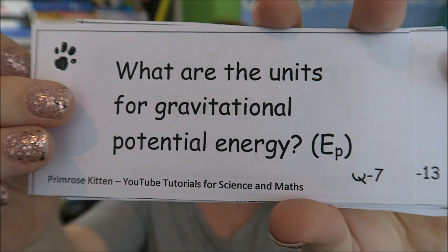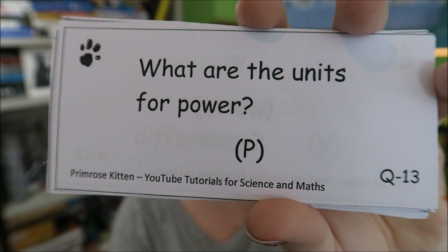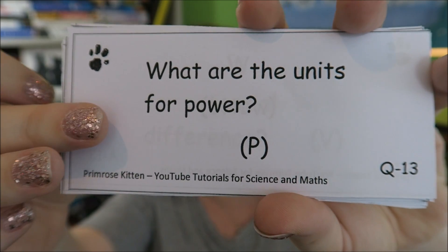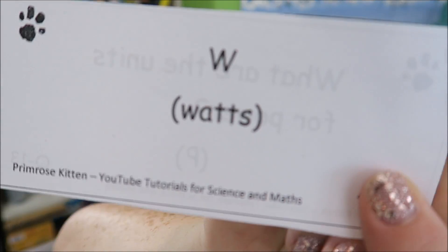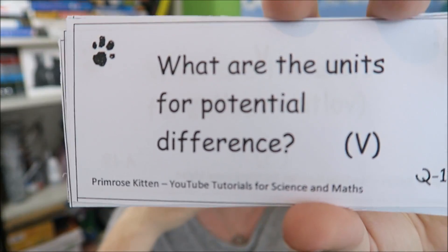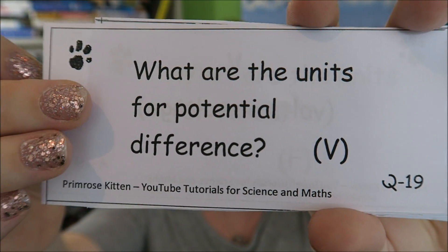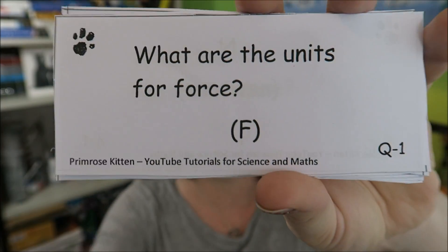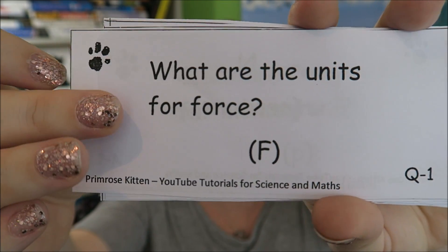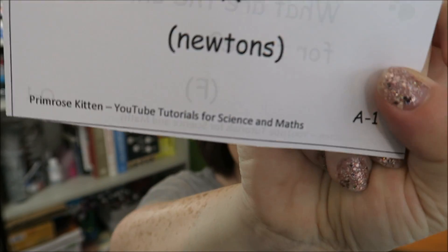What are the units for gravitational potential energy? Again, all energy is measured in joules. What are the units of power? Watts — power is measured in watts. What are the units for potential difference? Potential difference is measured in volts. What are the units for force? Force is measured in newtons, and it is really, really important that you get your capital and your lowercase letters correct. Newtons is a capital N, not a lowercase N — you will not get the marks for a lowercase N.